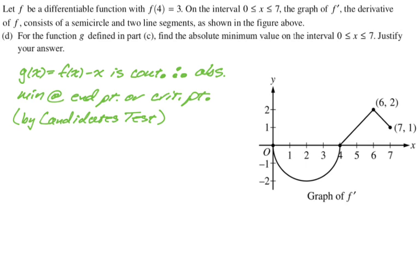And the reason that that is true is the candidate's test. So you don't usually need to name the candidate's test, but I'm naming it anyway. So by the candidate's test. Now, we already know that g prime is f prime minus 1. But we need the critical points. So we need to know when that is equal to 0.